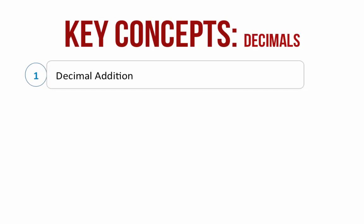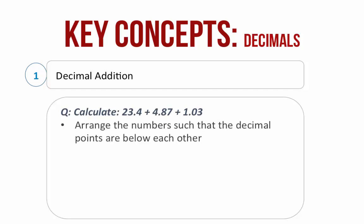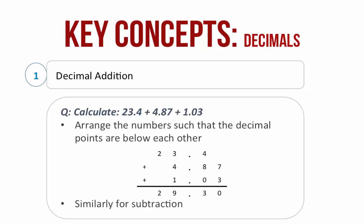Decimal addition is like adding any two numbers. Let's take an example: 23.4 plus 4.87 plus 1.03. Arrange the numbers such that the decimal points are below each other, then add them like you would add any other number. Similarly for subtraction.